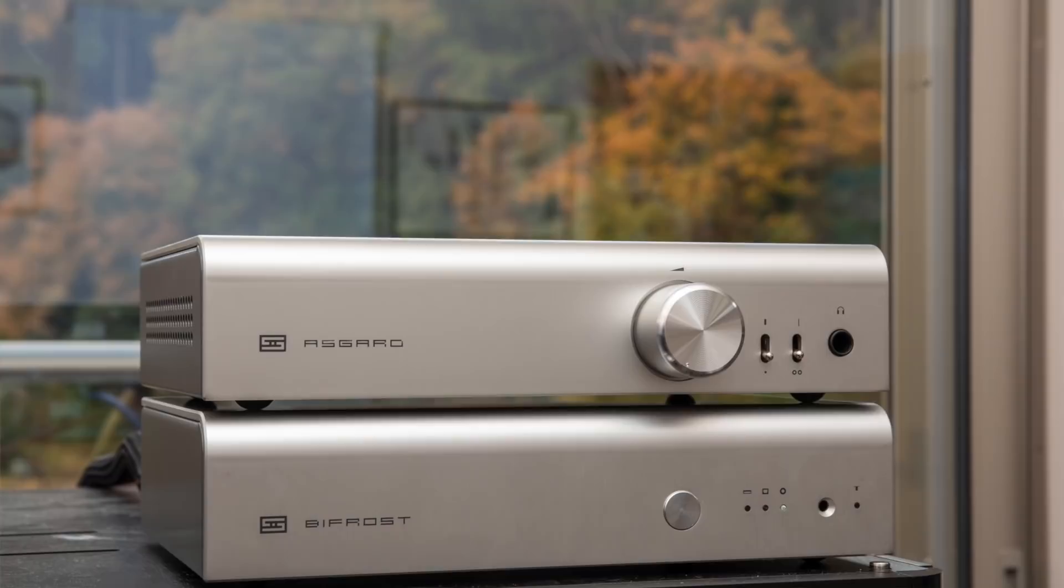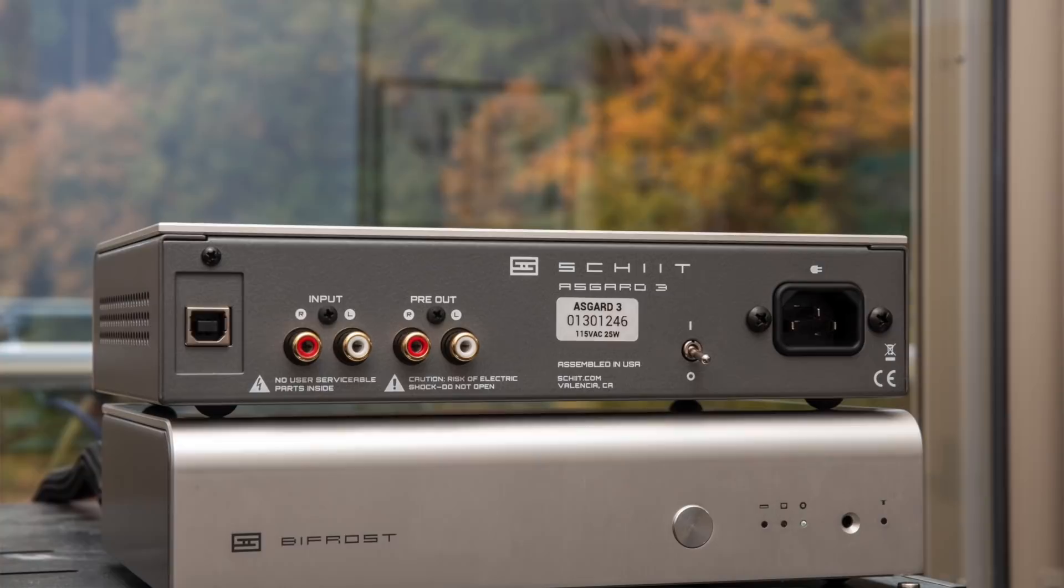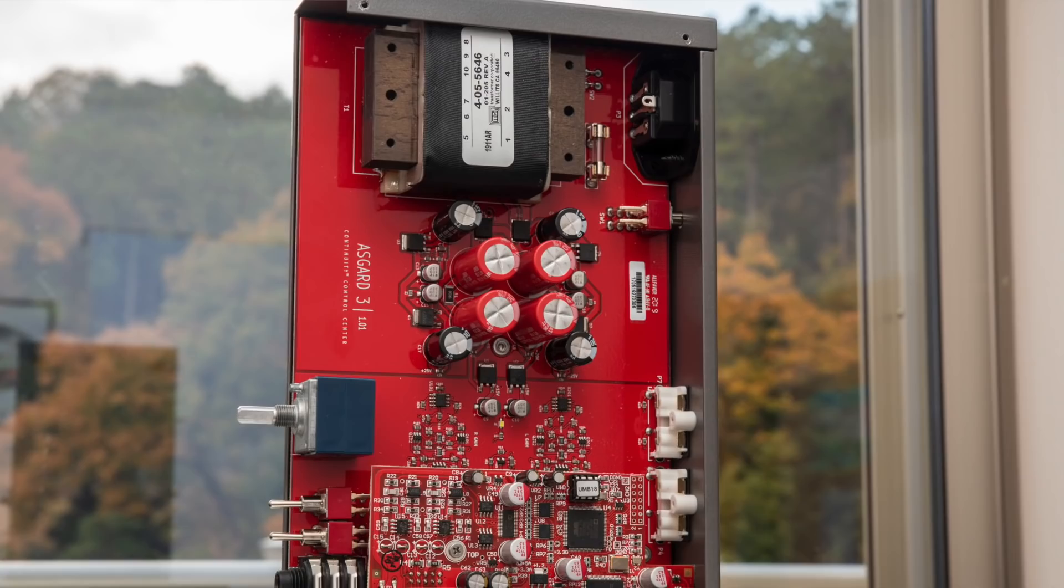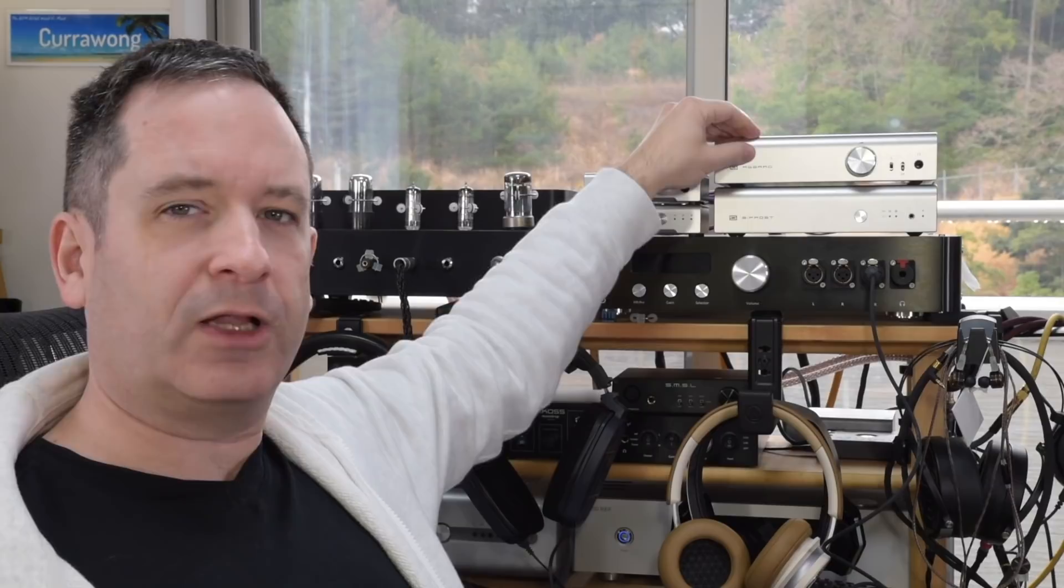On the larger side we have the Asgard 3 which is the latest version of their very original product. Unlike the original Asgard which was a pure class A amp, this is a class AB amp. Although for the most part, most people playing back music through headphones will only have it operating in class A mode.